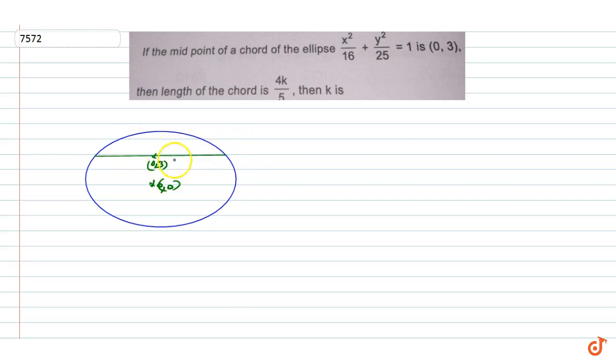Now since this is the midpoint of the chord, here the value is alpha and here the value is minus alpha. The y-value here is 3, here it is 3.